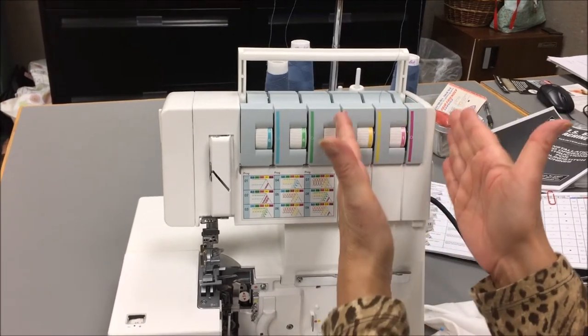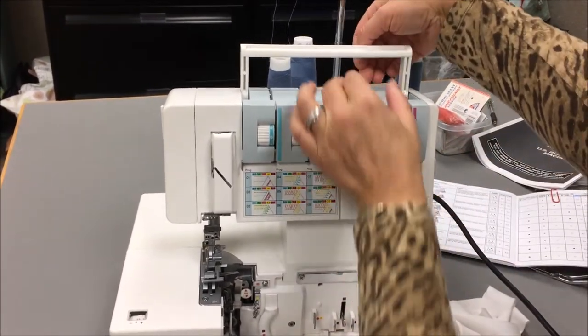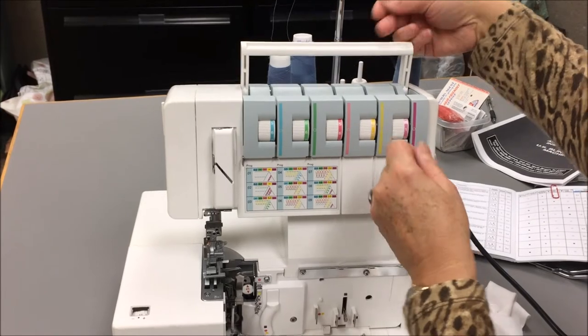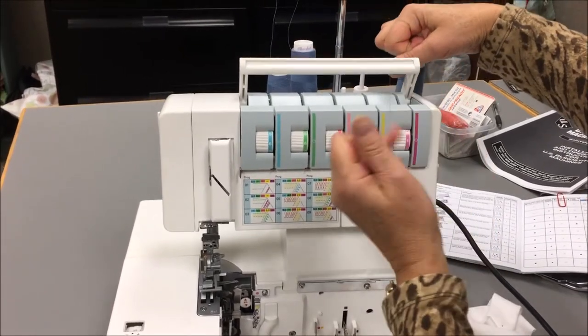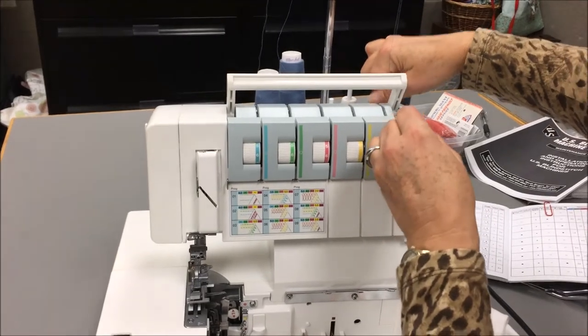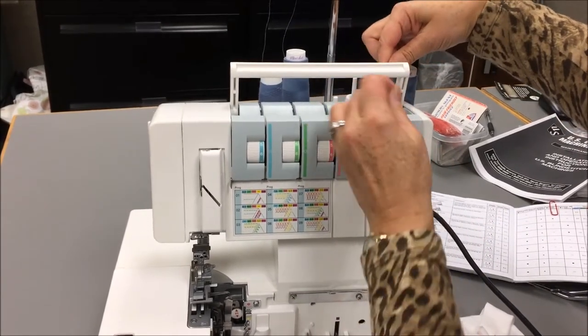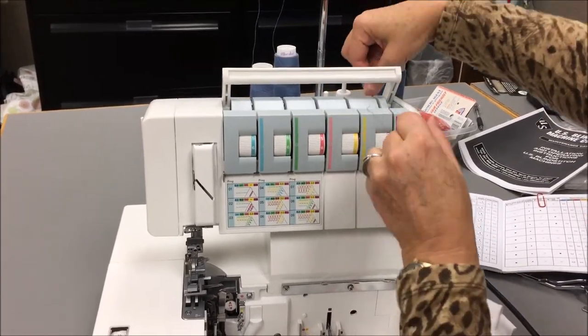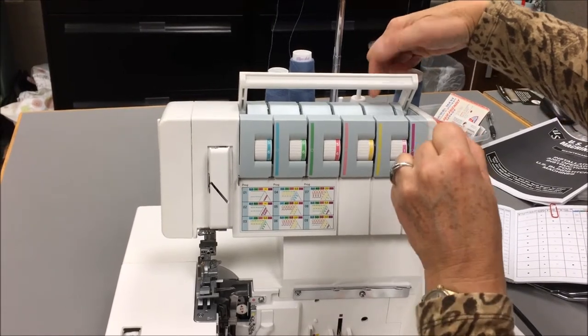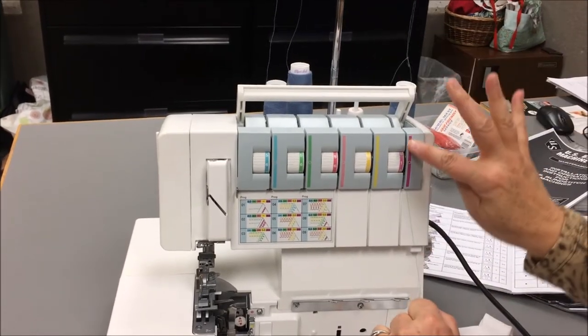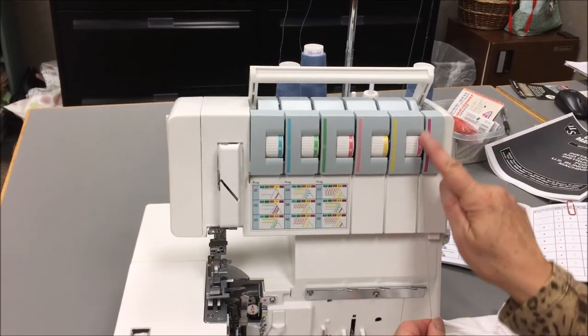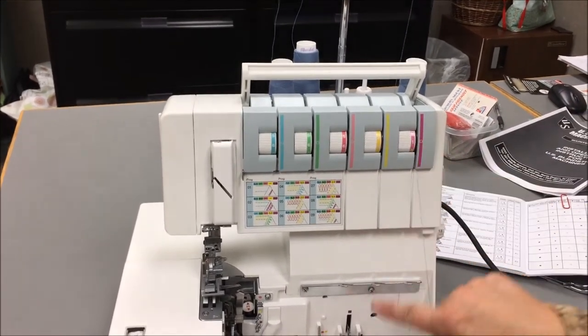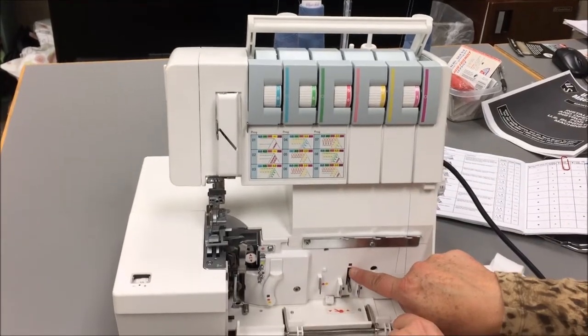It really is important that our thread goes into the tension disc in order to get a good stitch. Hold the thread taut between your hands. Put it in this loop back here. It's quite tight, I think it's like flossing teeth. Now the thread goes into the tension disc, and you can pretty much hear it click when it goes in. This is magenta color, and the code is magenta square.